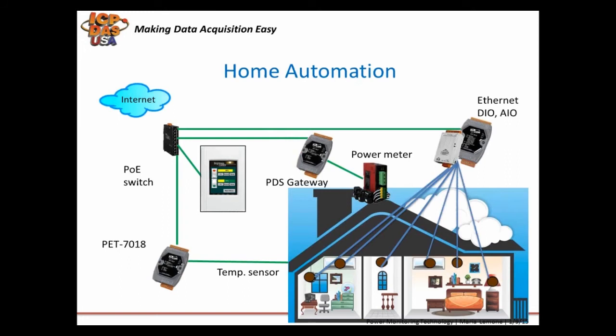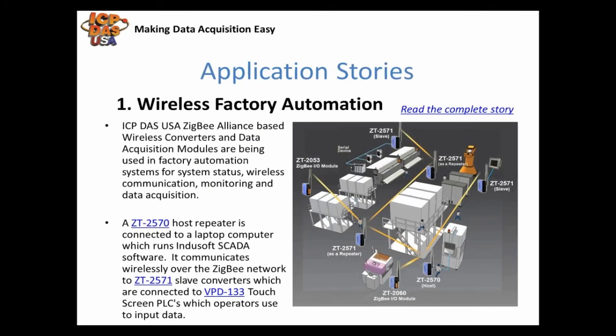Touchscreen controllers are being used in home and building automation applications. They are connected with temperature sensors, power meters, Ethernet IO modules, and power over Ethernet switches. In home automation applications, the system can automatically turn lights on and off, trigger alarms, and make life much easier. ZigBee Alliance-based wireless converters and IO are being used in factory automation systems for passing information and controlling equipment. They enable machine equipment to communicate wirelessly and help gather information like count and temperature, bringing information back to operators regarding production status, which increases productivity.